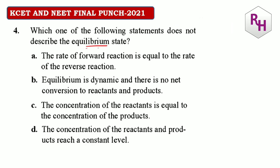Which of the following statements does NOT describe the equilibrium state? Rate of forward reaction equals rate of backward reaction — correct. Equilibrium is dynamic — definitely correct. Concentration of reactants and products reaches a constant value — correct. Remember: equal concentration is NOT a condition — they reach constant, not necessarily equal values. So the answer for this question should be C.